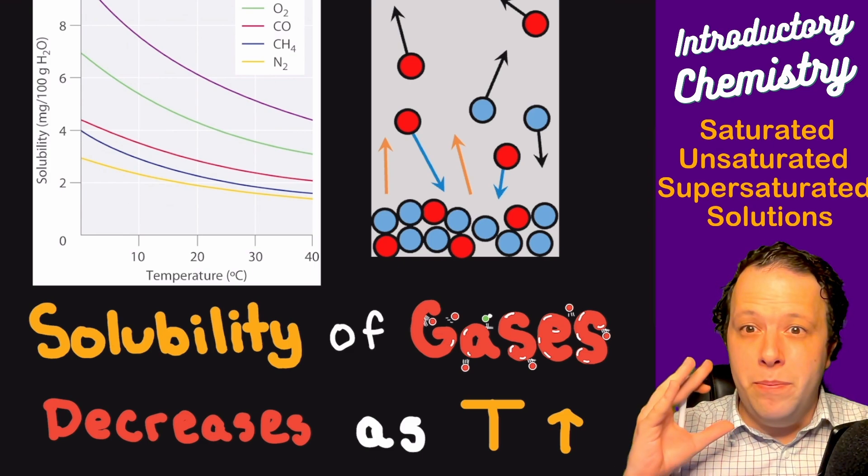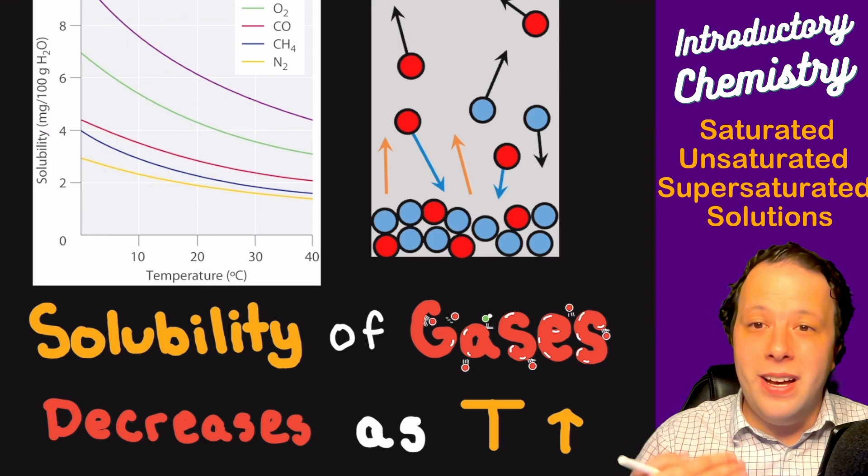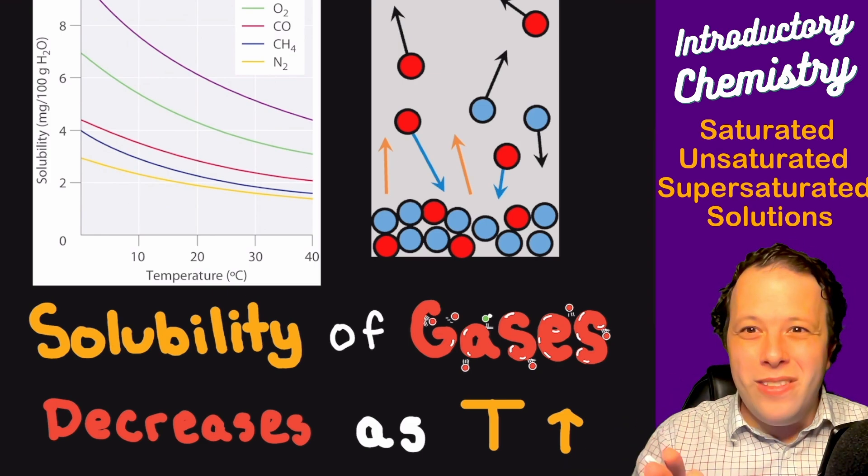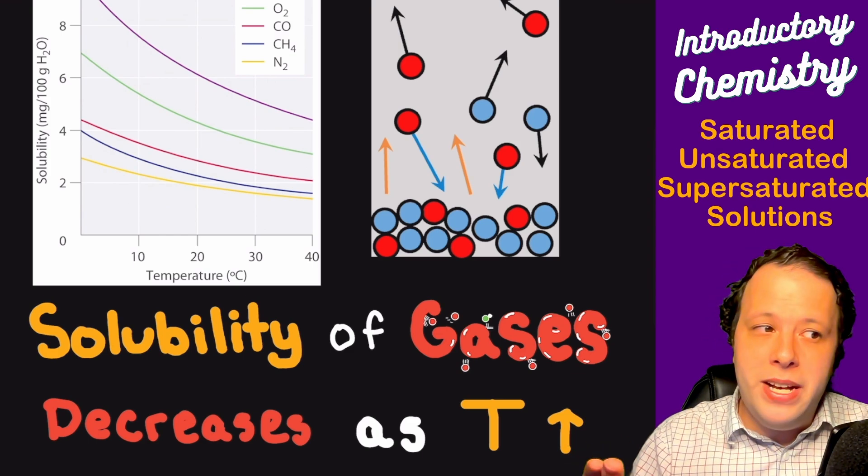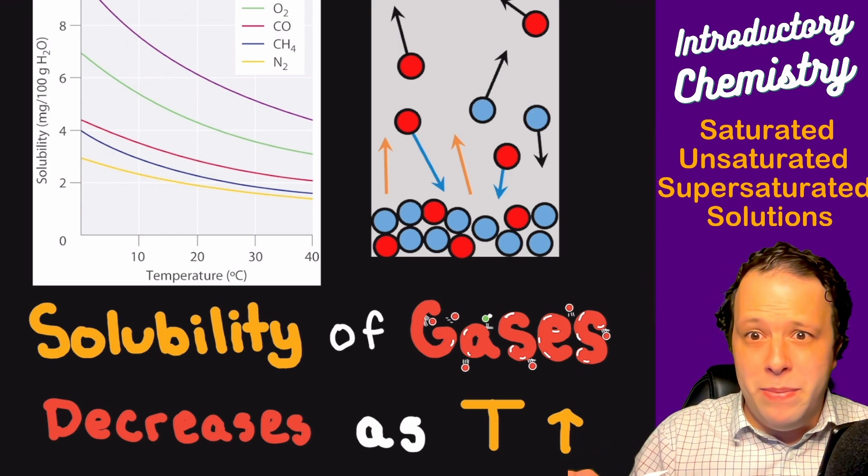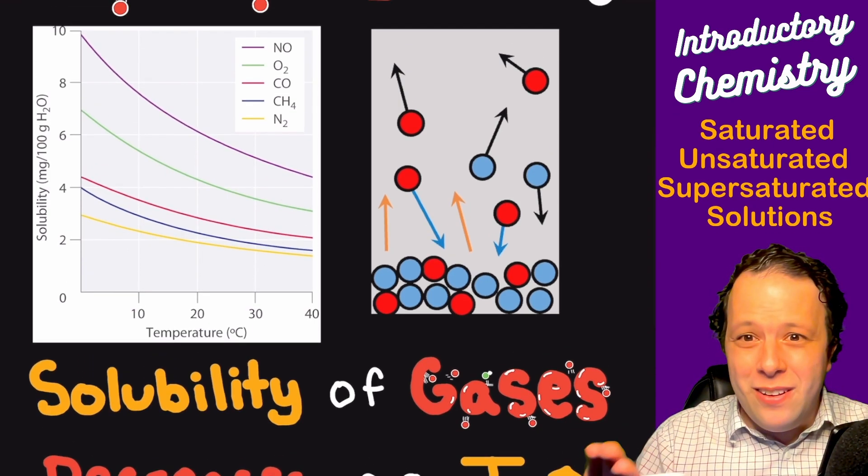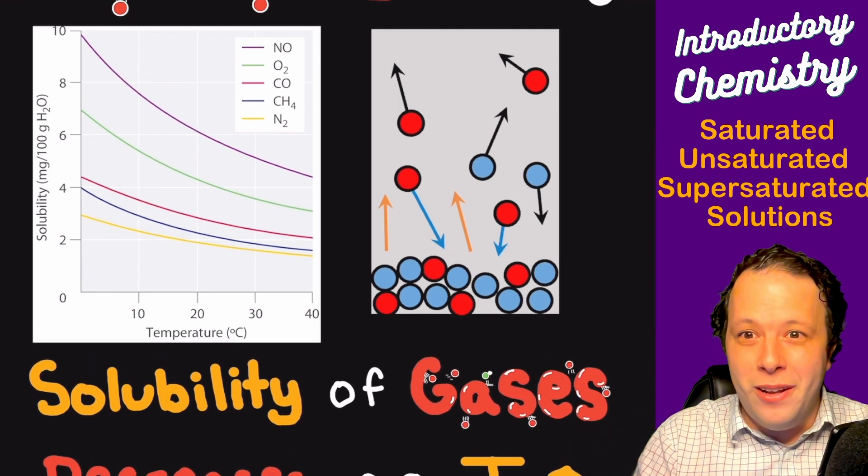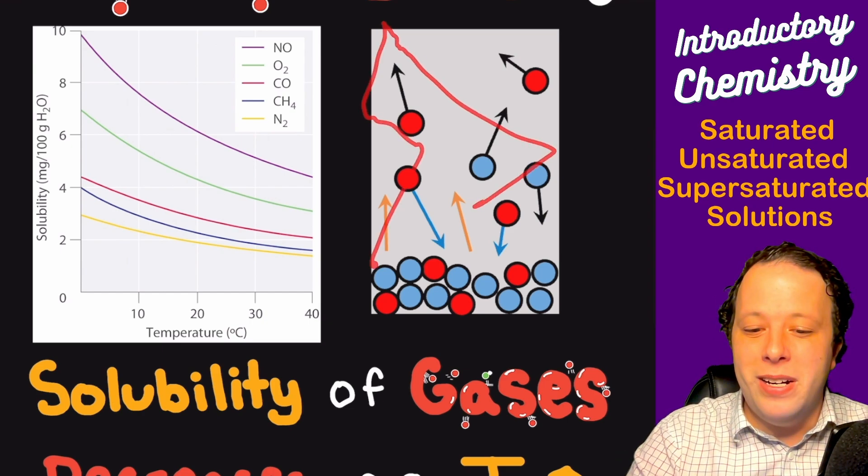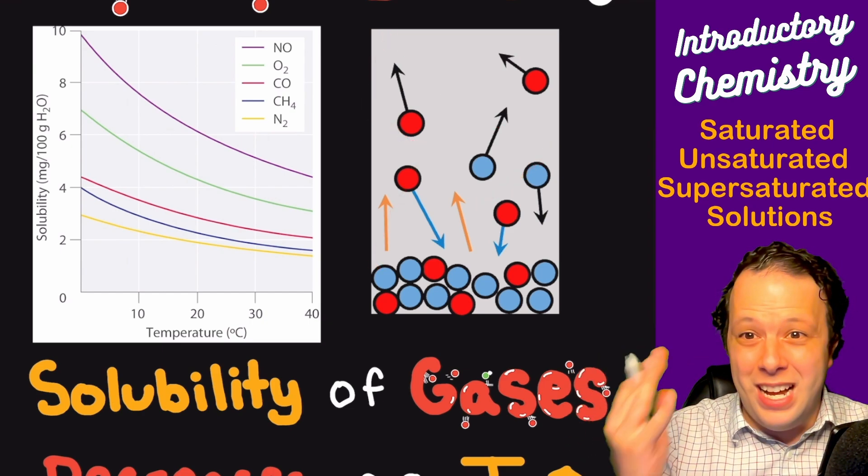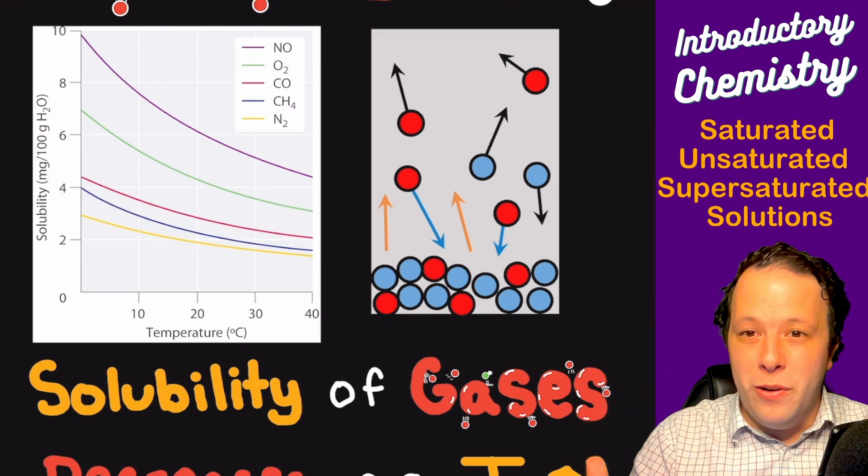Gases behave like billiard balls. They bounce all over the place and the more kinetic energy they have, the higher the temperature, the more they're going to actually bounce as a result. One way to think of it as an analogy is imagine giving like a five-year-old about 10 pounds of candy. They're going to be running around like crazy. The higher the temperature goes, the more those gas molecules are going to move and they're going to continue to bounce around like a ping pong ball going all over the place.